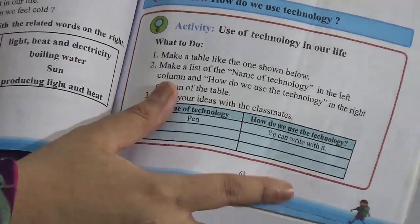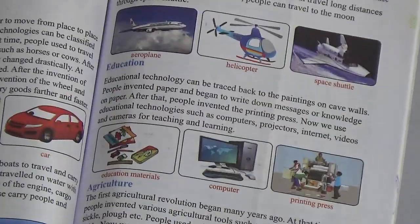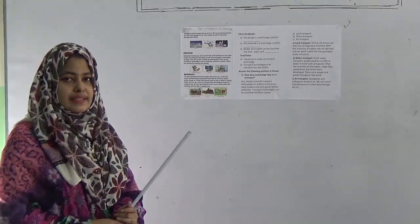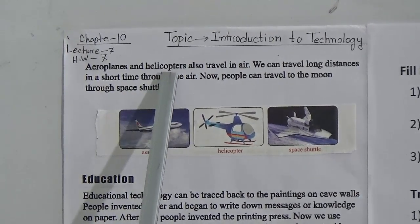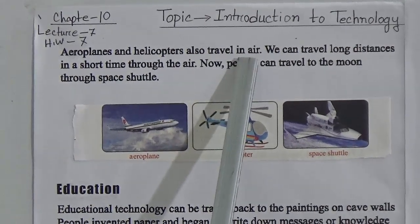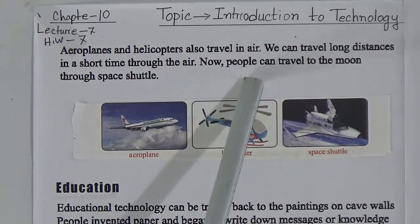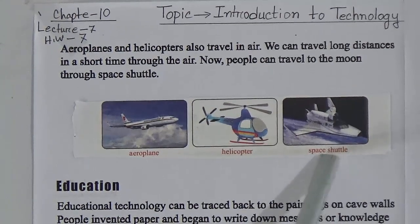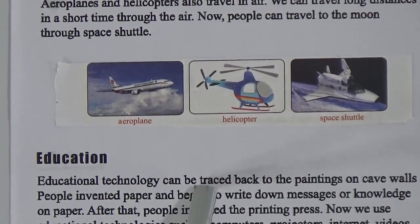This is your science book and today we will discuss Chapter 10. We have already discussed up to page 63, and now we will discuss from page 67. You can see here is an aeroplane, helicopter, and this is a space shuttle. Aeroplanes and helicopters also travel in air. We can travel long distances in a short time through the air. Now people can travel to the moon through a space shuttle.